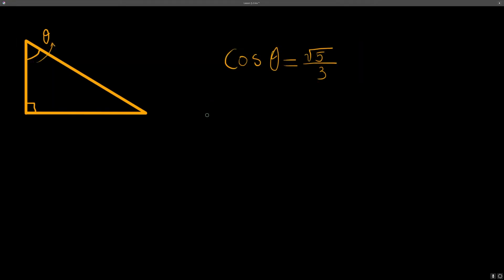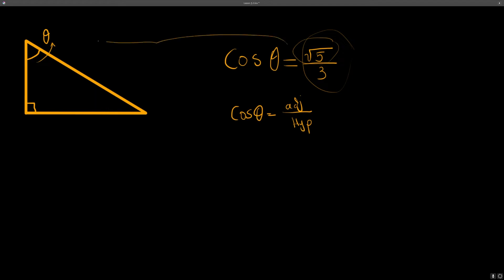Another interesting fact is that cosine can give us sides without them being explicitly written. If you remember, cosine of the angle equals adjacent over hypotenuse. So if it's given like this, we substitute: adjacent is radical 5, hypotenuse is 3, and then we find the last side using the Pythagorean theorem. That's another concept you should be able to use on the exam.